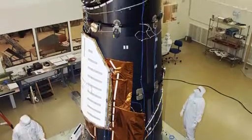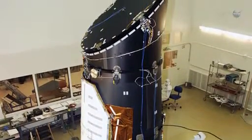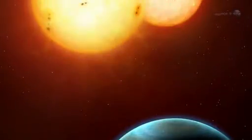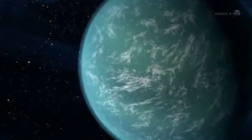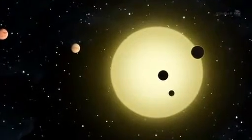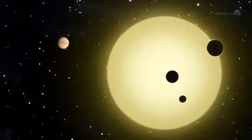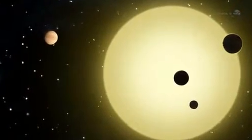NASA's Kepler spacecraft is discovering a veritable avalanche of alien worlds. Recent finds include planets with double suns, massive super-Earths and hot Jupiters, and a miniature solar system. The variety of planets circling distant suns is as wonderful as it is surprising.